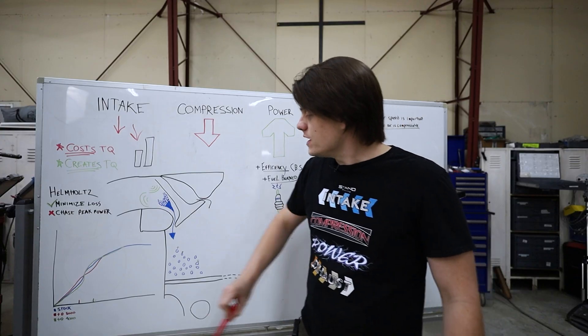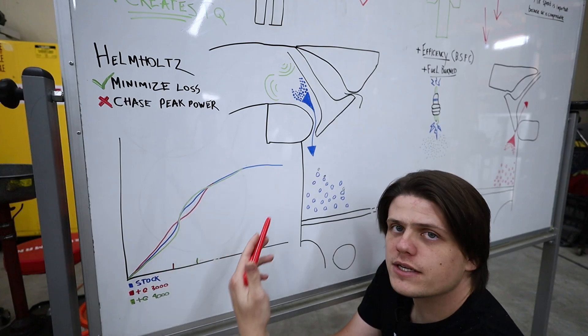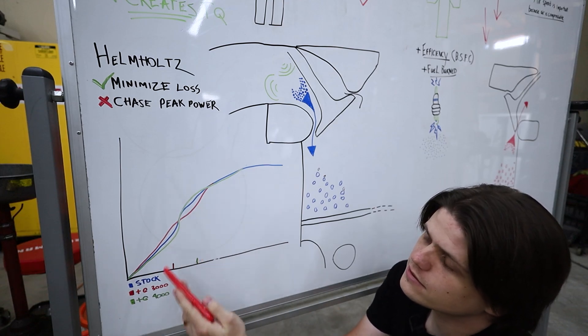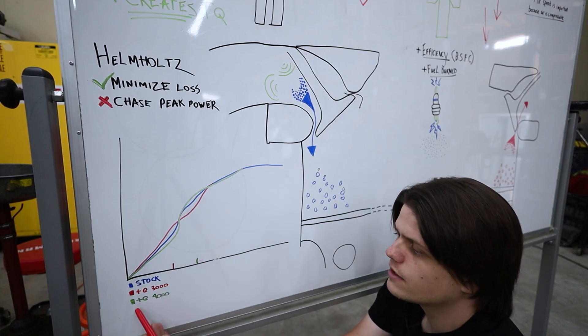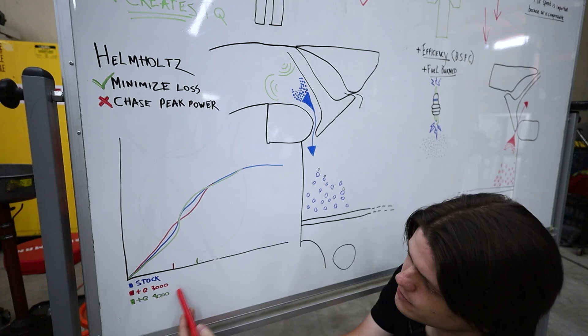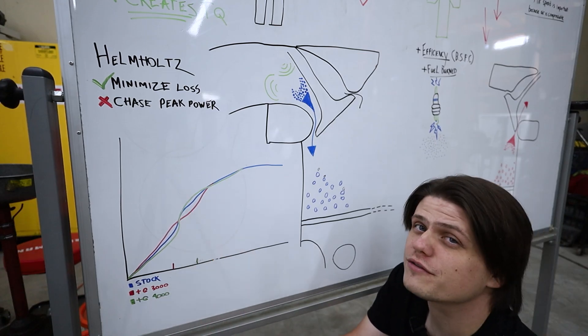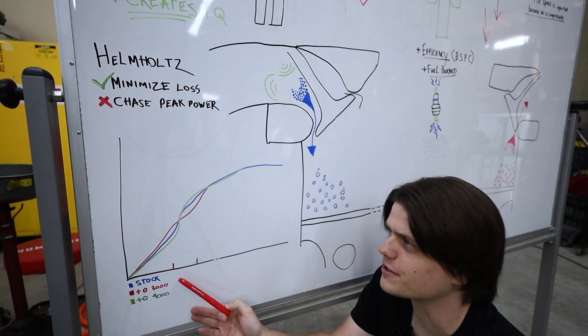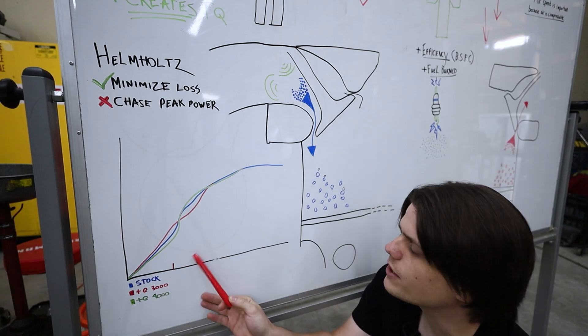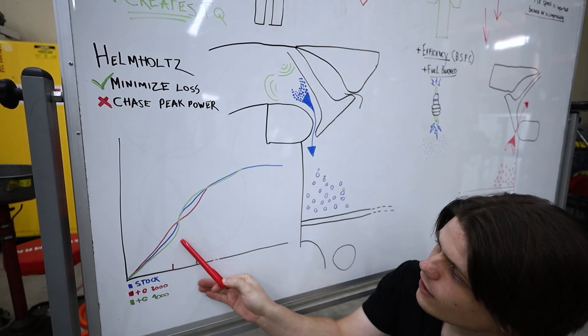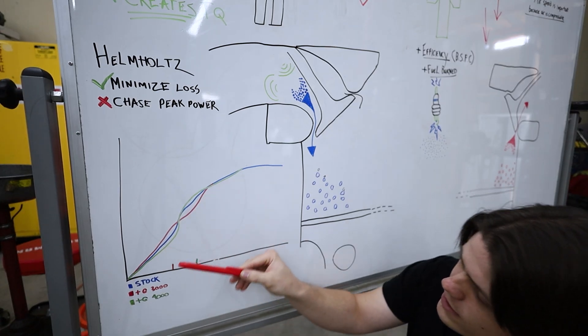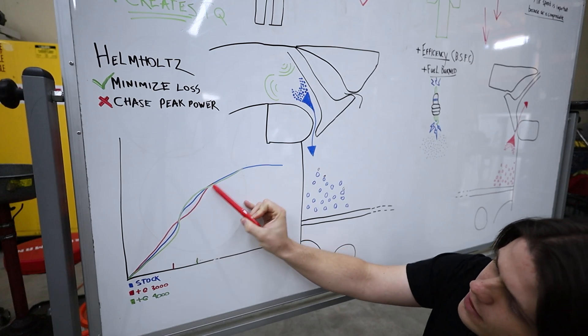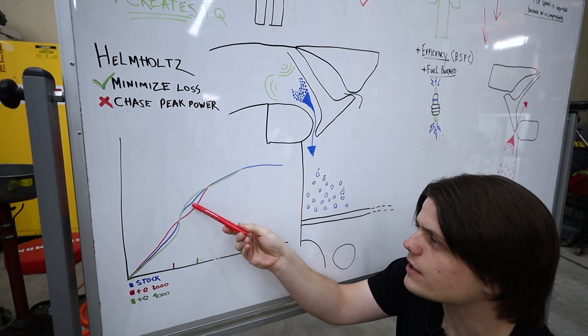So what I would do when considering Helmholtz resonance tuning is to minimize loss rather than chase peak power. Because like I said before with every benefit you get from resonance there's also a drawback at a slightly different RPM either slightly above or slightly below the place where you get the benefit. In this little example the blue line represents the stock configuration, the red line is intake tuned to make more power at 3000 RPM based on resonance, and then the green line makes more power at maybe 3500. This isn't a perfect example because you'd never really want the engine to make power that low unless you're driving a tow truck or something but it's just to illustrate the point.